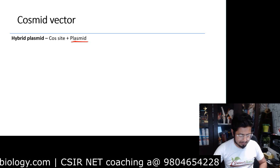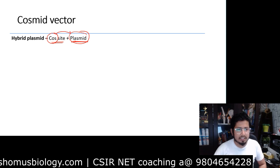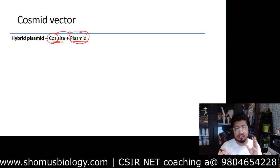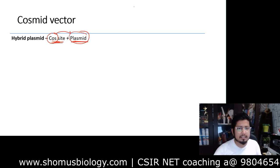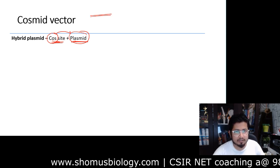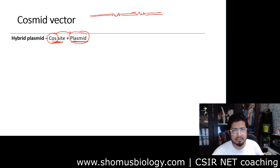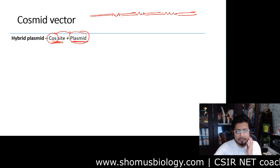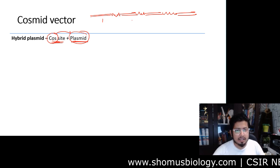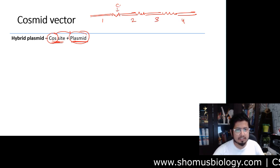Cosmid is produced by taking a plasmid and attaching cos sites to it, because cos sites play a very important role. The cos sites help us create extensive lengths of DNA — the full-length DNA followed by a cos site, then another length of DNA, then a cos site, repeatedly. This is how the whole genome or DNA that we want to amplify is produced multiple times, all connected by cos sites.